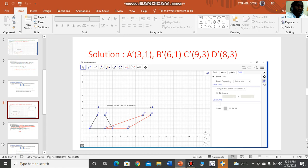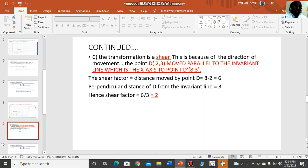In this slide, we look at the solutions for A', B', C', and D'. In this case, you find that A has moved to A', B moves to B', and the direction of movement is parallel to the x-axis. The transformation is a shear because the direction of movement of point D is parallel to the invariant line, which is the x-axis, to point D''. The shear factor calculated as 8 minus 2 divided by 3 to get 2.